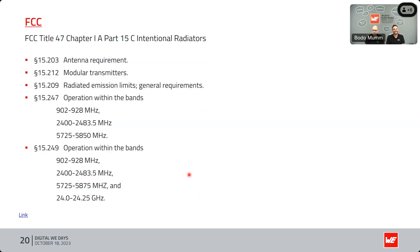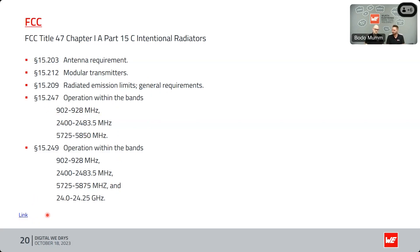The FCC is the certification required in the USA. There are several paragraphs to consider: antenna requirements, modular transmitter radiated emission limits, and the different frequency bands. For our products, the relevant bands are 902–928 MHz and the 2.4 GHz band. A link to the FCC website is provided in the presentation where customers can find more information about FCC requirements.